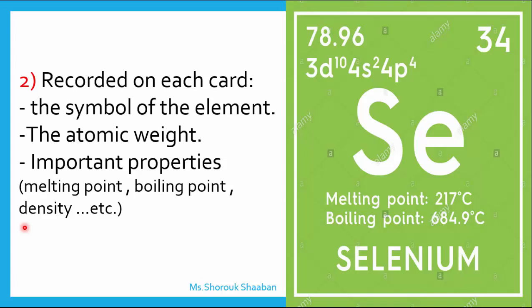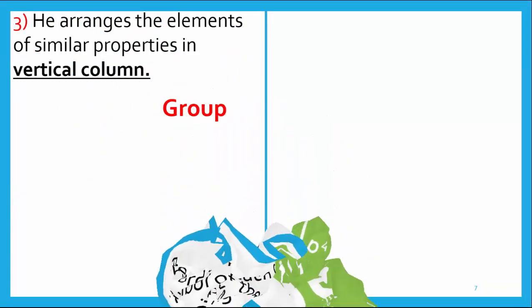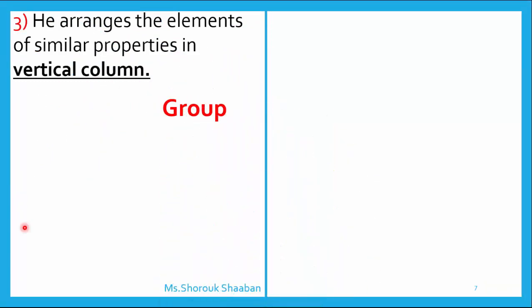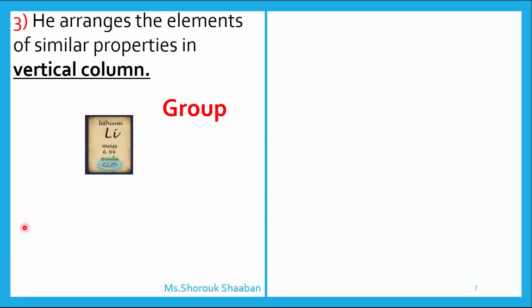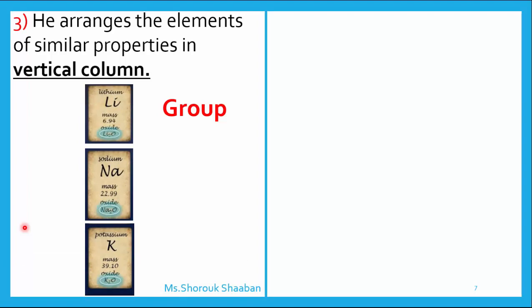After he made the 67 cards and wrote the details on them, he arranged the elements of similar properties in a vertical column — vertical means above each other. This vertical column is called a group. Elements of similar properties have similar melting points; for example, lithium might have a melting point of 30, and sodium would be 30.1 or 30.2 — close to each other, similar but not the same.